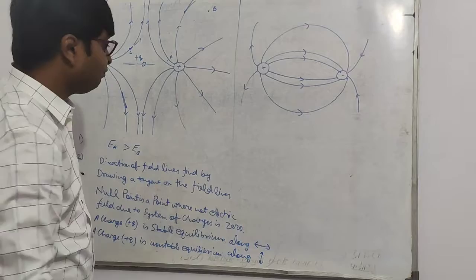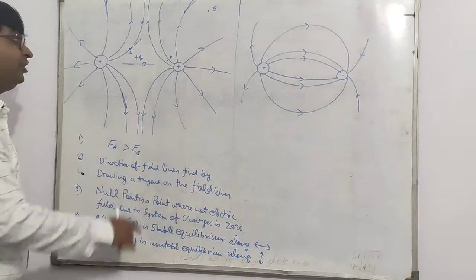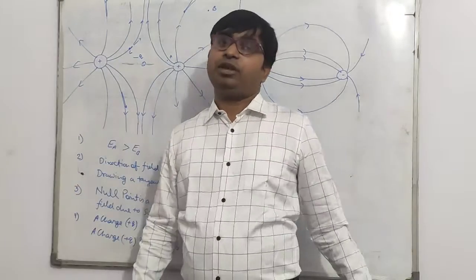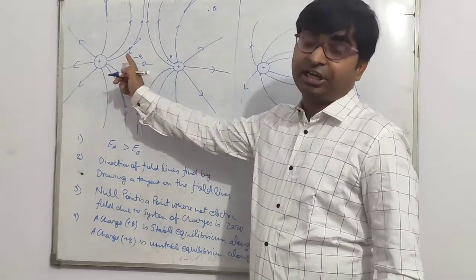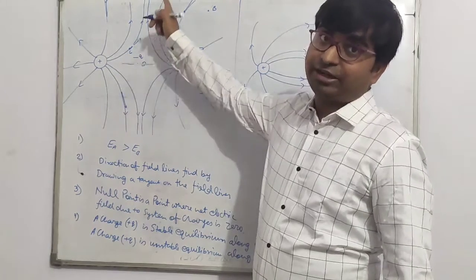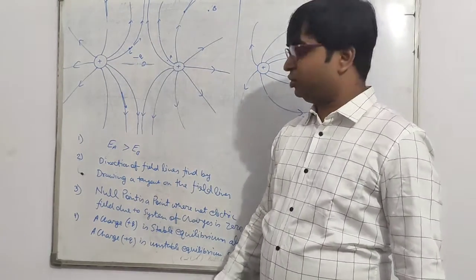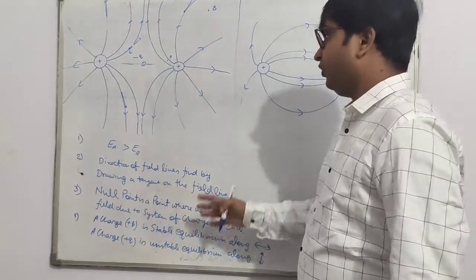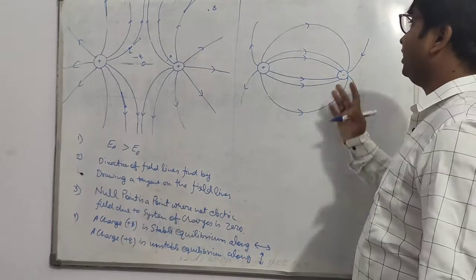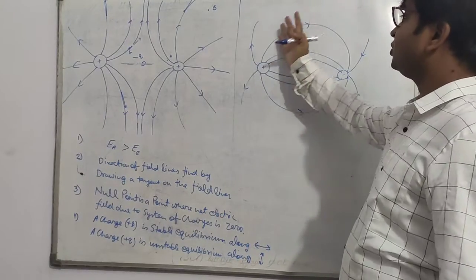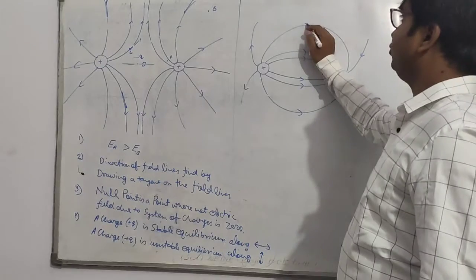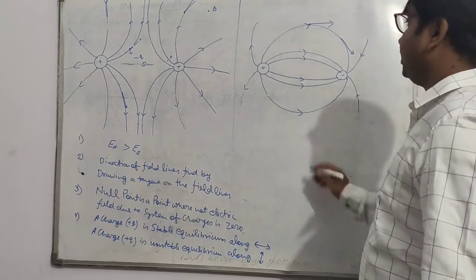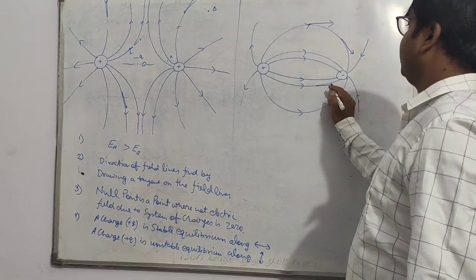For a plus Q charge at the null point: along the perpendicular direction it is unstable, and along the horizontal direction it is stable. If we place a minus Q charge instead, then it is vice versa — along the perpendicular direction you get stable equilibrium, and along the horizontal direction you get unstable equilibrium. For the plus-minus charge system, this is the representation of electric field lines. To find the electric field direction at any point, you draw a tangent at that point.